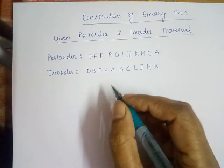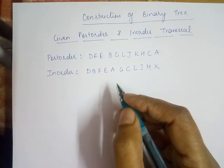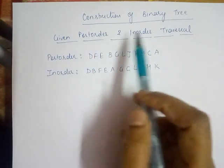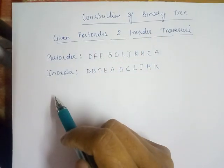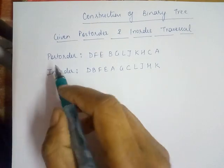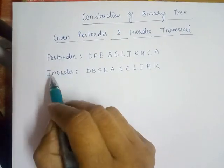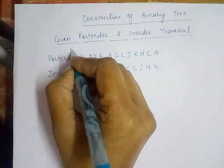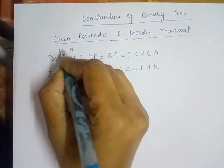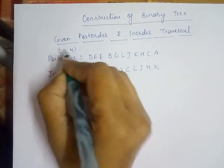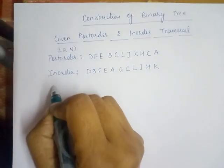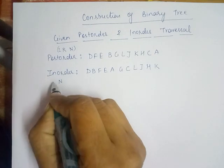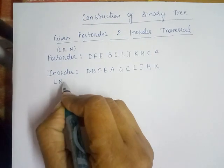We will construct a binary tree when postorder and inorder traversals are given. In postorder, we traverse left, right, and then node — the node comes last. In inorder, the node comes in between, so we have left, then node, then right.